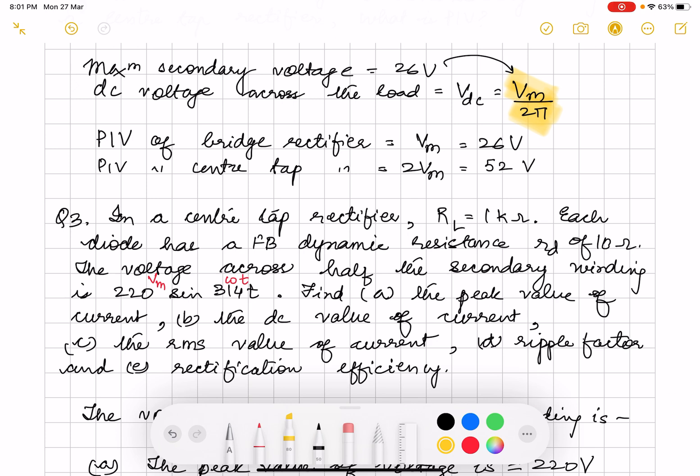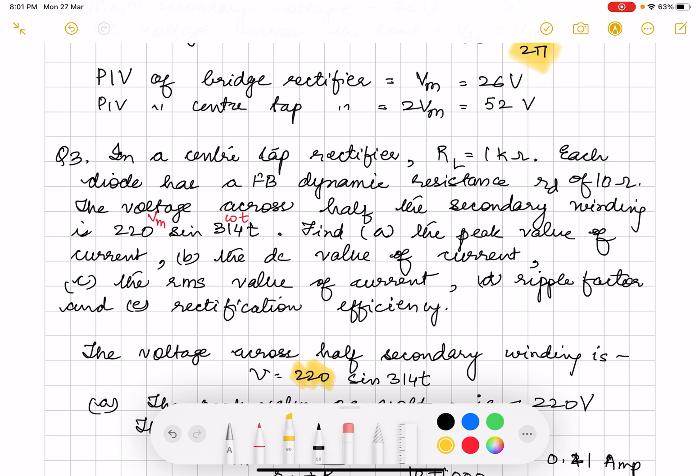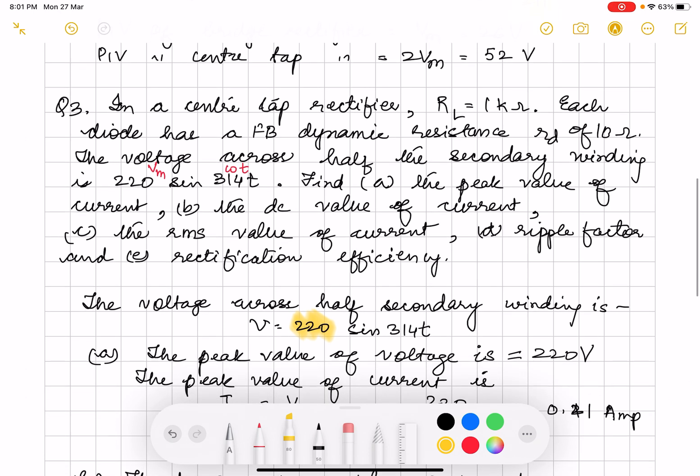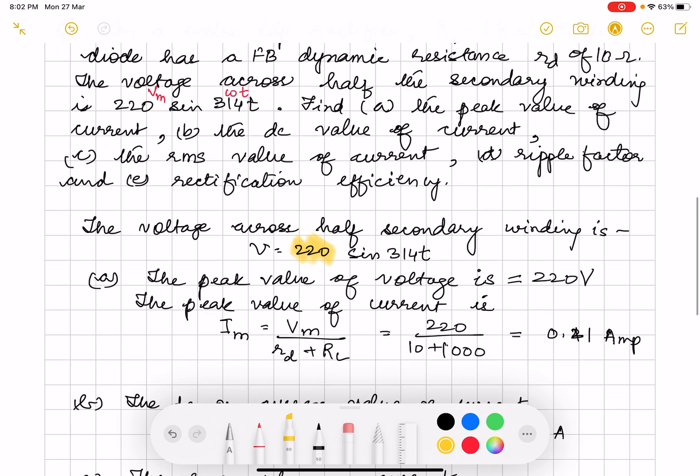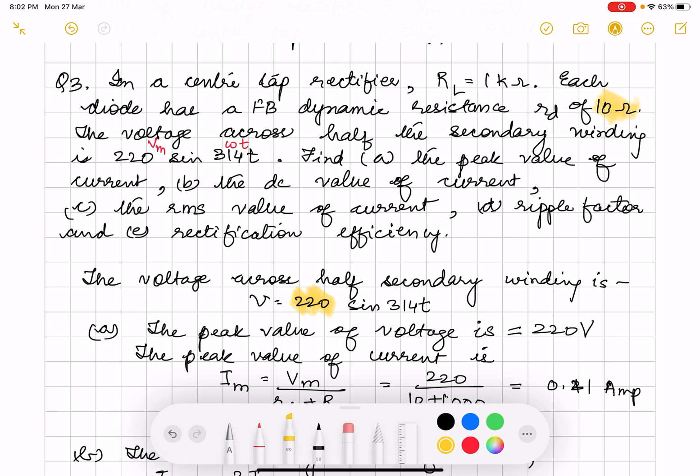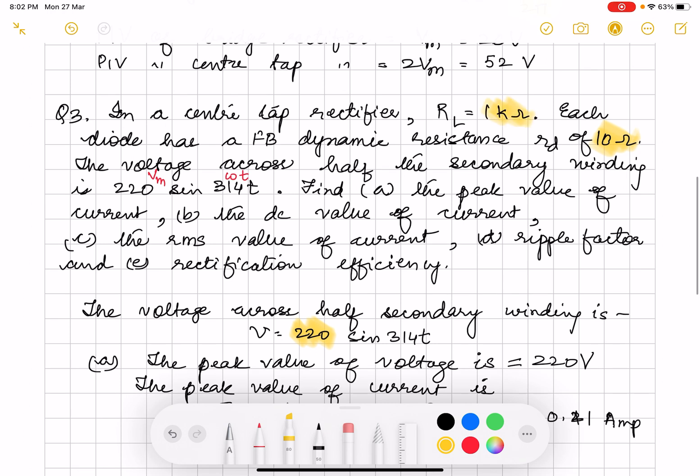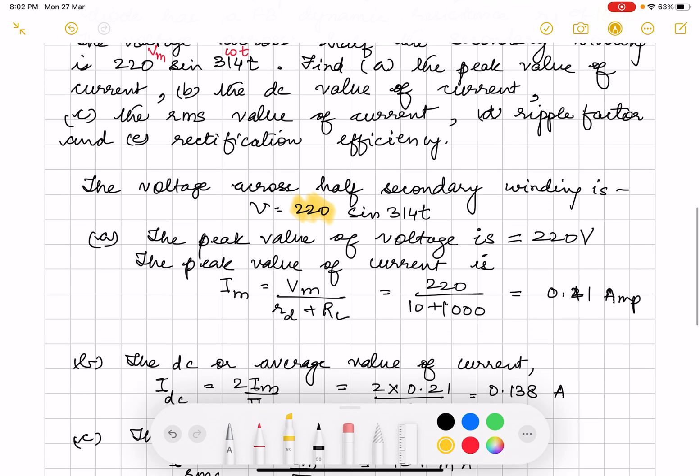So the voltage across half the secondary winding is 220 sin 314 T. So Vm is 220. RL kitna hai? 1 kilo ohm. Units ka dihan rakho. 10 ohm, 1 kilo ohm. So we write 10 plus 1000. Comes out to be 0.21 amps.